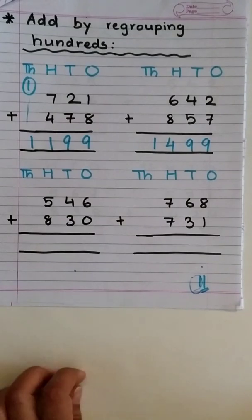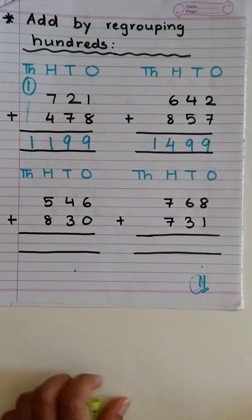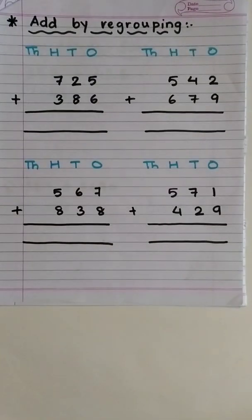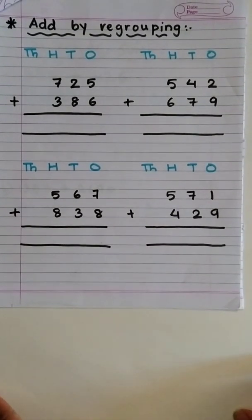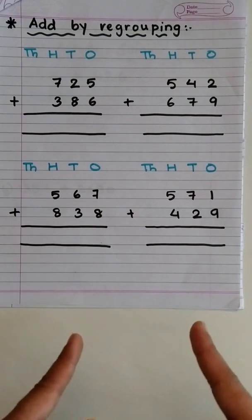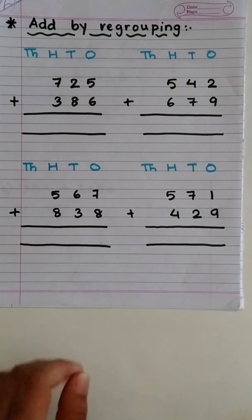Now, can you try the remaining 2 on your own? Show it to me. Now, it's clear to you how to add by regrouping at ones, tens and hundreds place. So, it's time for mixed regrouping. Okay? Let's start.